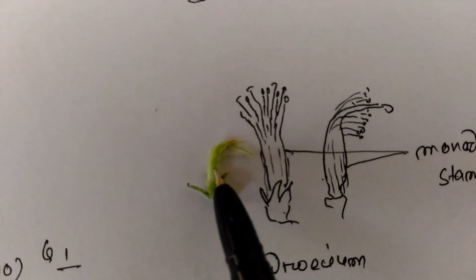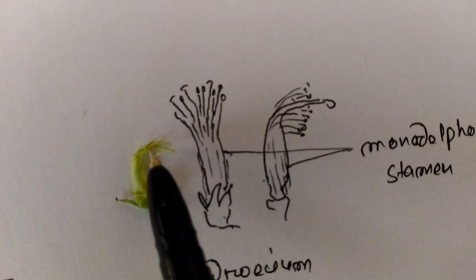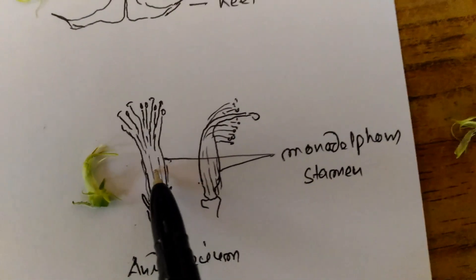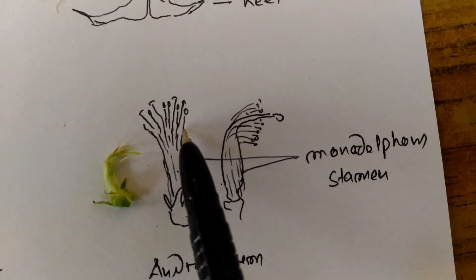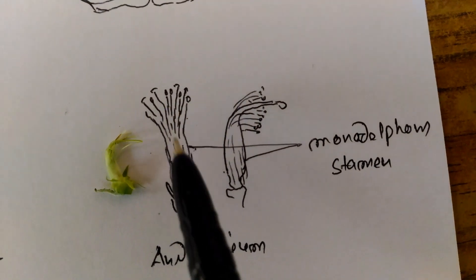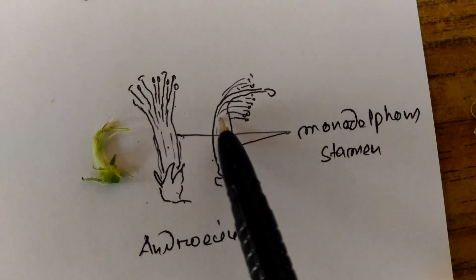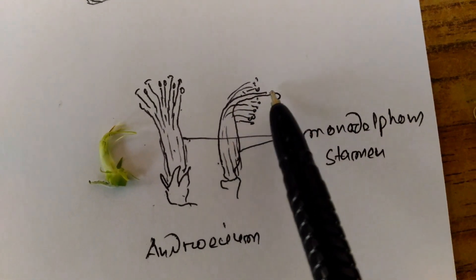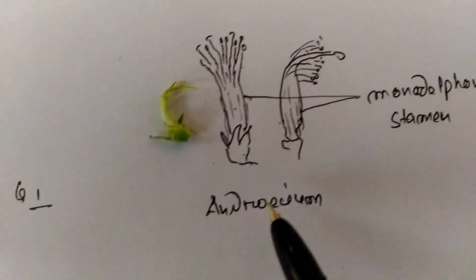This one is the stamen. Here the stamens are monadelphous. Monadelphous means united in a bundle. The number is 10 and alternately short and long like that. This structure covers the female structure, that is the gynoecium.